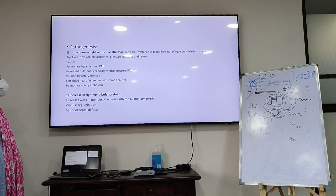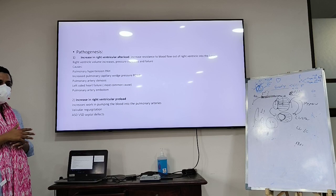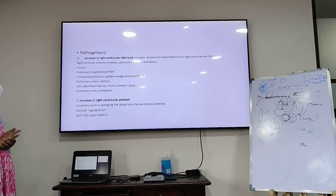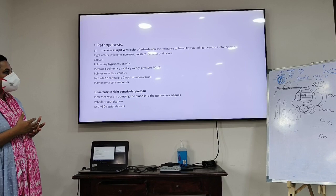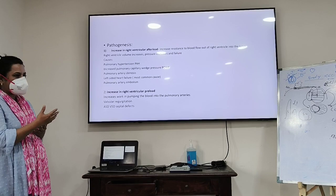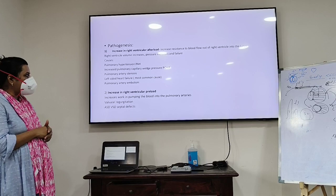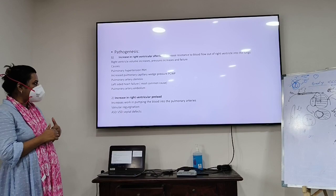The pathogenesis of RV failure: it will be either an increase in RV afterload, increase in preload, or intrinsic RV dysfunction with reduced contractility. Increased afterload causes increased RV volume and pressure leading to failure. Causes include pulmonary artery hypertension, increased pulmonary capillary wedge pressure, pulmonary artery stenosis, left-sided failure (the most common cause of right-sided failure), and pulmonary embolism.